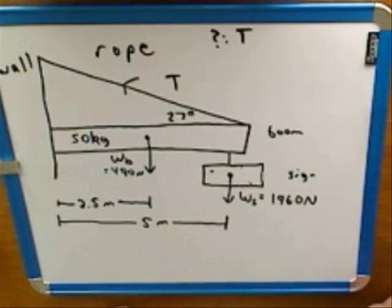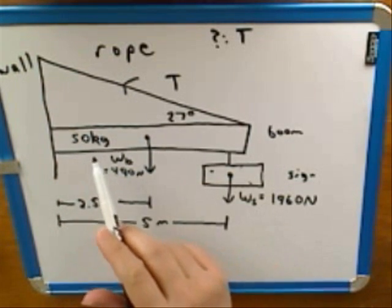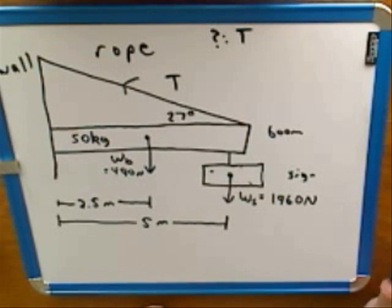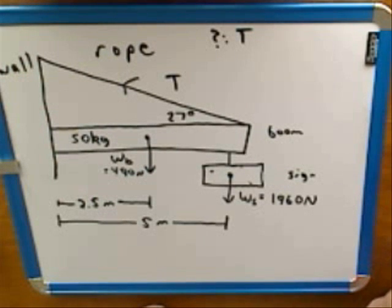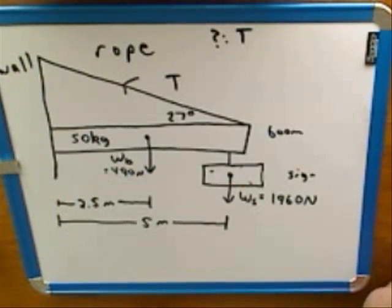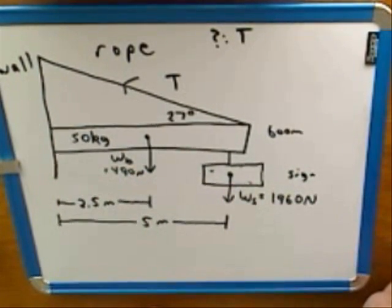Finally, there's one more thing touching the object: the wall. Would the boom just be resting on the wall, or attached to it? Based on common sense, if we were setting up an apparatus to support a sign, we wouldn't just rest the beam on the wall — that wouldn't hold it in place. We would attach it by a hinge.